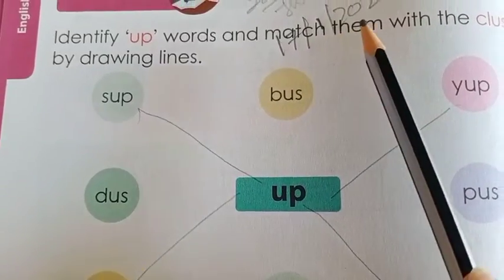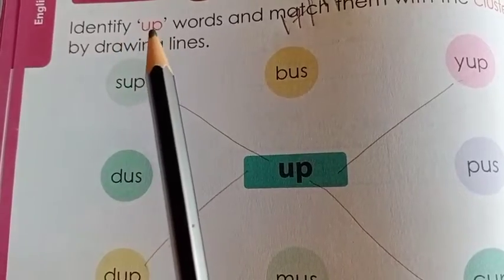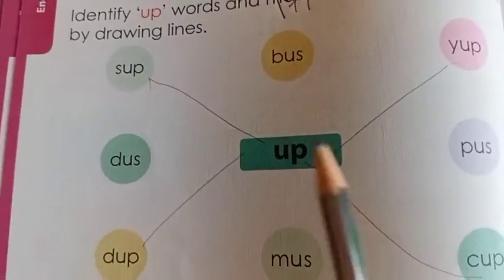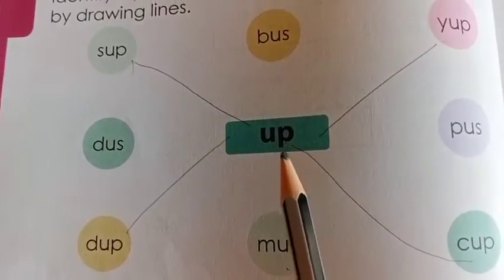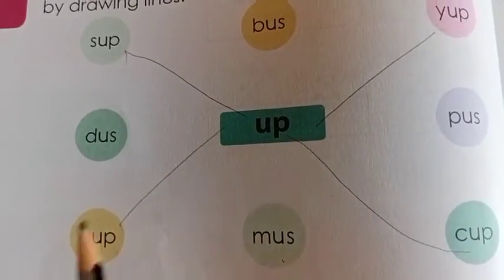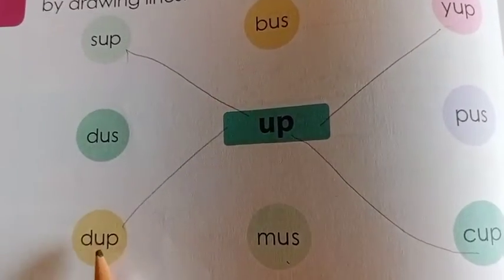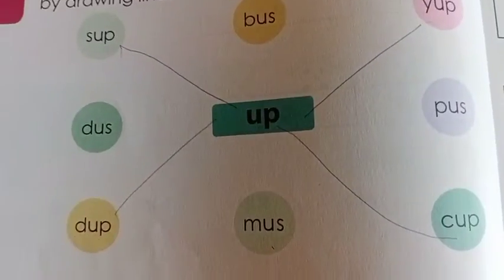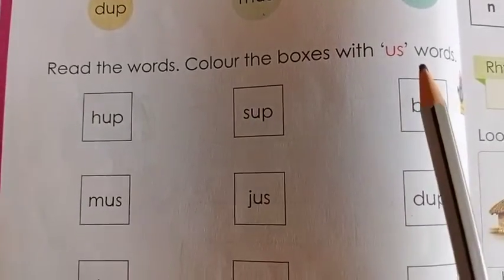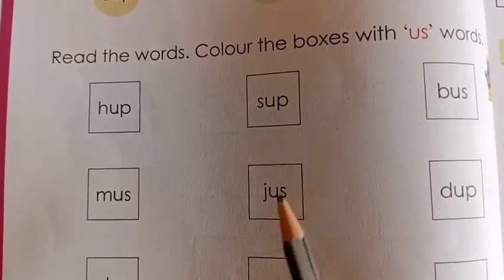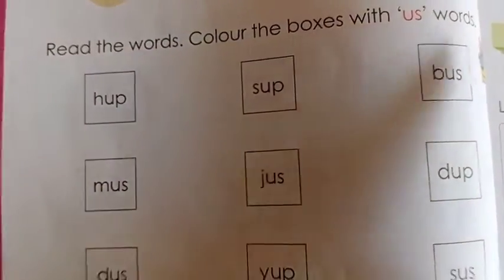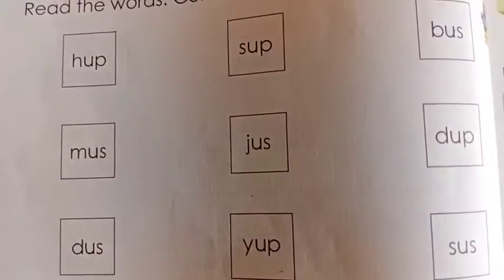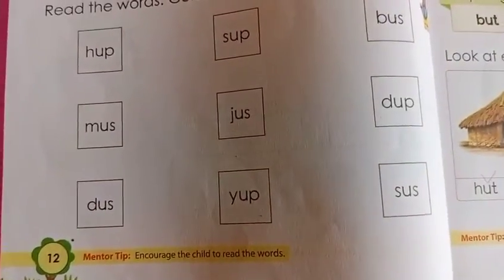Put the date 17-1-2022. Identify UP words and match them with the cluster by drawing lines. See, here is the two-letter cluster UP. By drawing lines you have to match them. Others are US words. Now read the words. Color the box with US words — where you find US words, color the boxes. You can color with one color or different colors. This is your homework, page number 12.